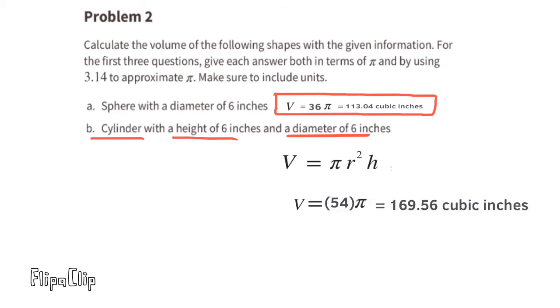And 9 times 6 is 54. So the volume of this cylinder would be 54 times pi, and using 3.14 to approximate pi, the volume of the cylinder would be 169.56 cubic inches.